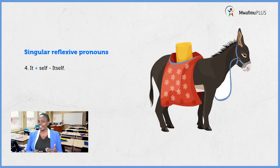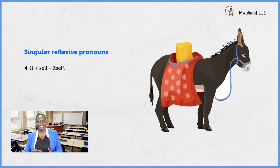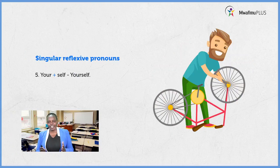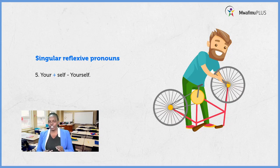Still we have another singular reflexive pronoun: it — the one that represents animals, objects, and words like a baby or a child. With it, if you add self, you get itself. Lastly, we have the pronoun you. The pronoun you gets its reflexive pronoun by using its possessive form, which is your. So if you are talking to one person it becomes singular — you will repair the bicycle yourself.